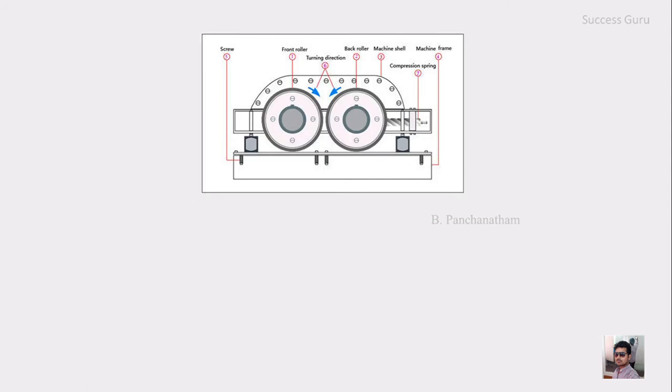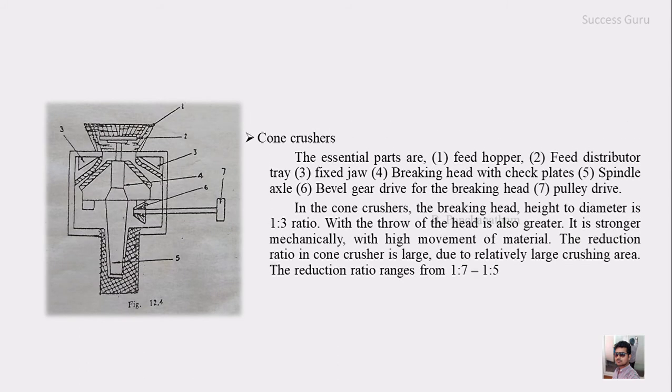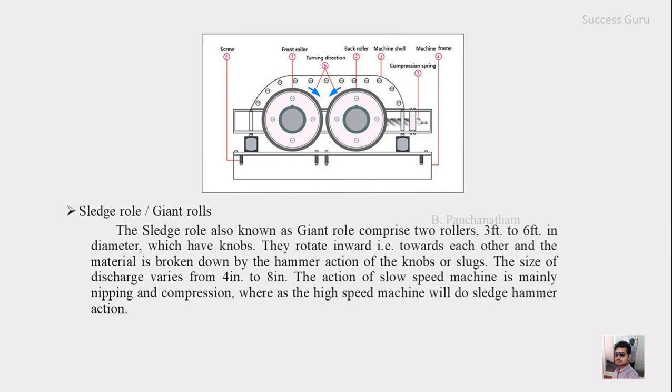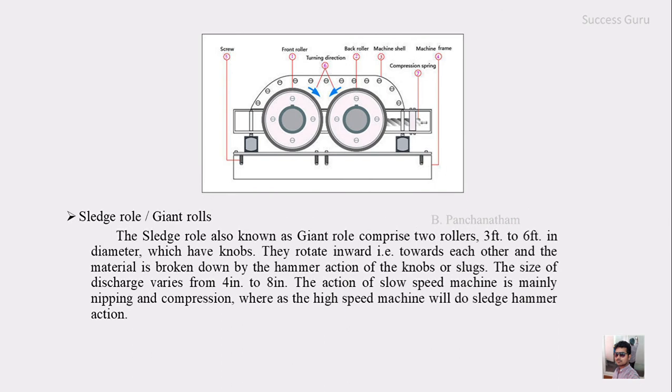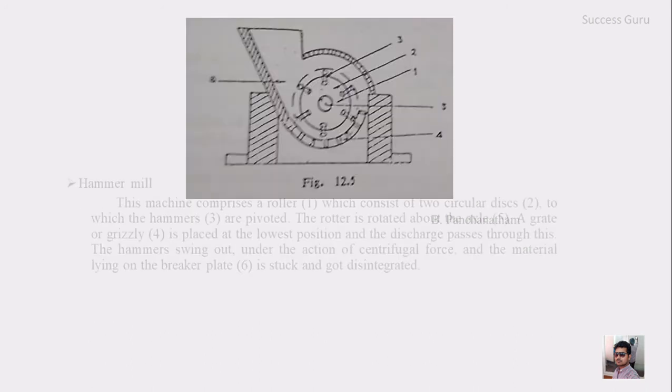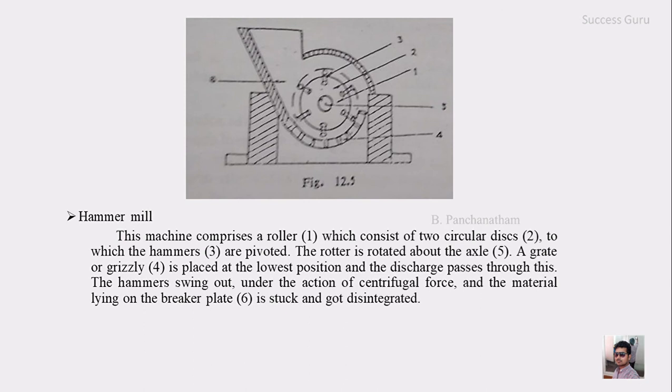In today's class we have seen three machines. The first one is the cone crusher where material will be very finely crushed. The second one is the sledge roll or giant roll in which you can simply compress the material or break it according to the size. The third one is the hammer mill where breaking is done by hammer action and crushed material will be thrown out through the grizzle or grate.